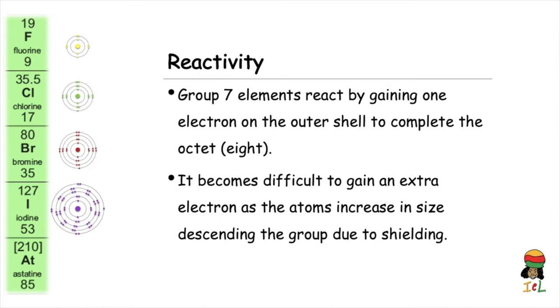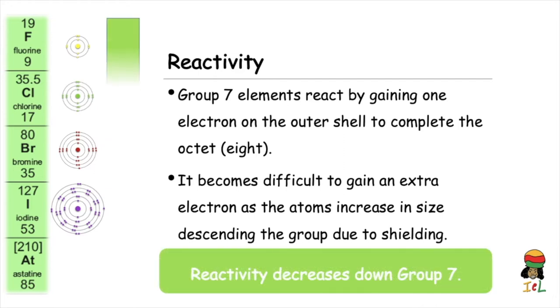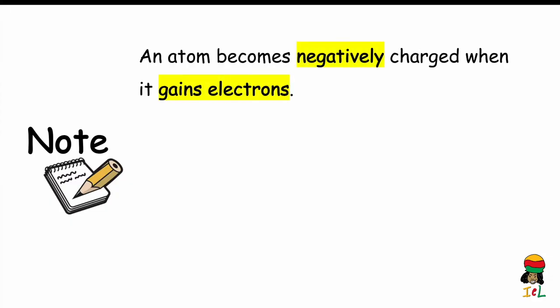In other words, elements lower down Group 7 are less reactive because they do not easily accept an additional electron. Therefore, reactivity decreases down Group 7.